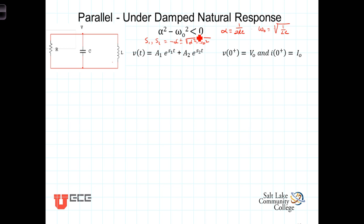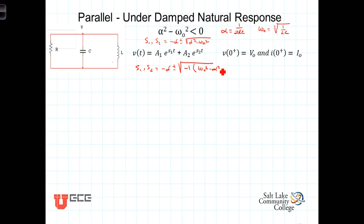This leads to the square root of a negative number, which makes S1 and S2 complex conjugates of each other. Rewriting S1 and S2, we write negative alpha plus or minus the square root of negative 1 times omega naught squared minus alpha squared. Pulling the negative 1 out of the radical gives us S1 and S2 equal to negative alpha plus or minus j times the square root of omega naught squared minus alpha squared.